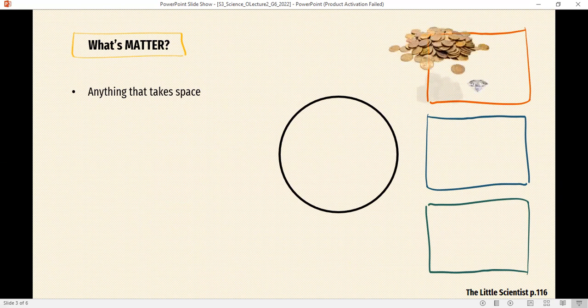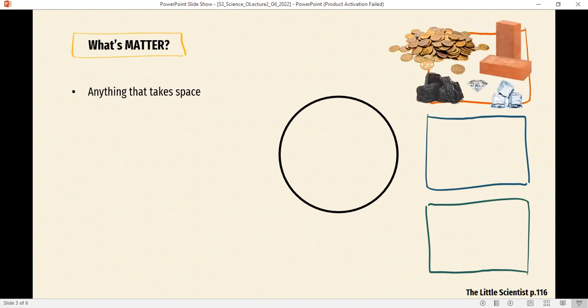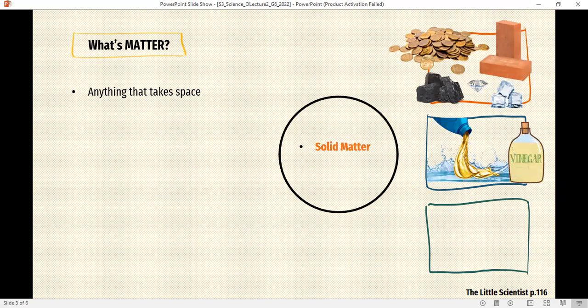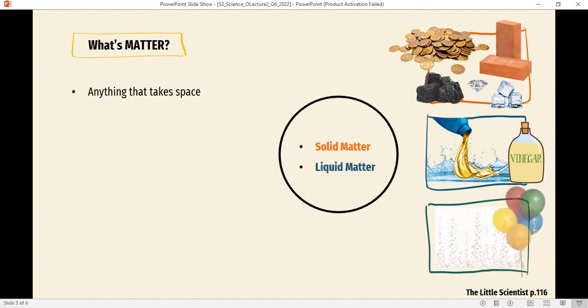Let's take some examples. Coins, diamonds, coal, bricks, ice: those are solid matter. These are examples of things that are solid. Oil and water, vinegar, Pepsi are examples of liquid matter. While the oxygen you breathe, the helium that you use to inflate your balloons are examples of gas matter. Matter exists in three different states.